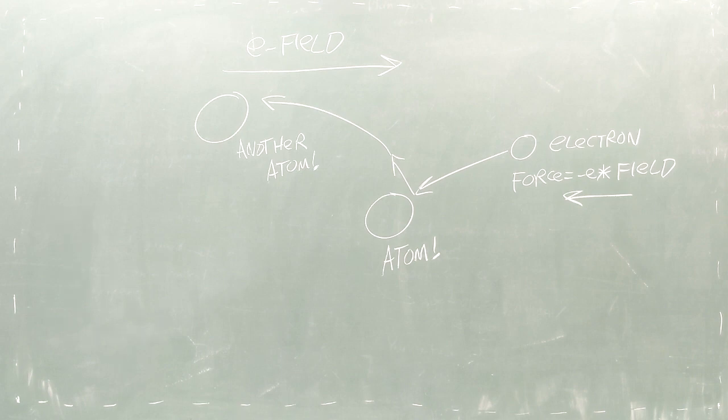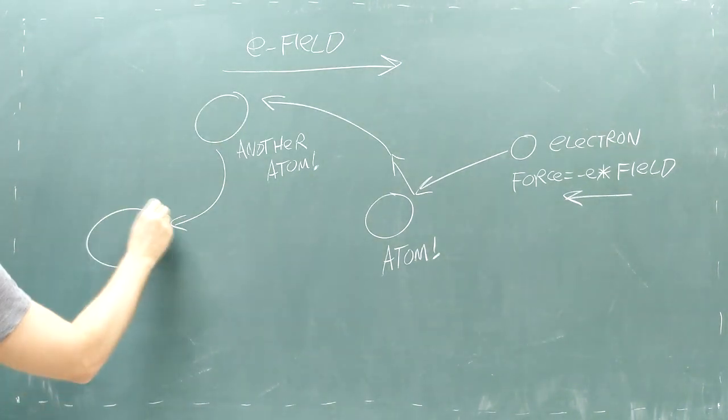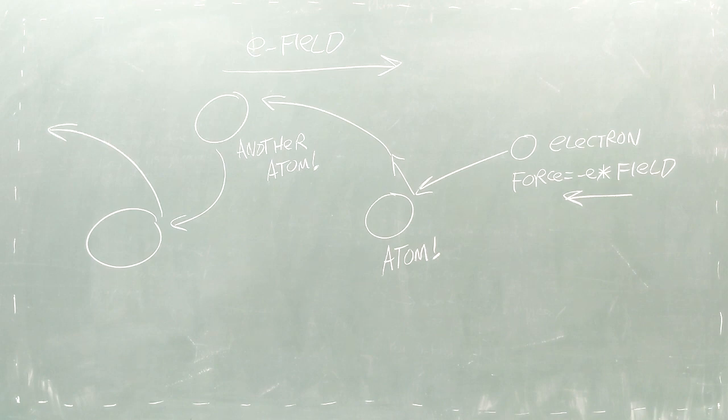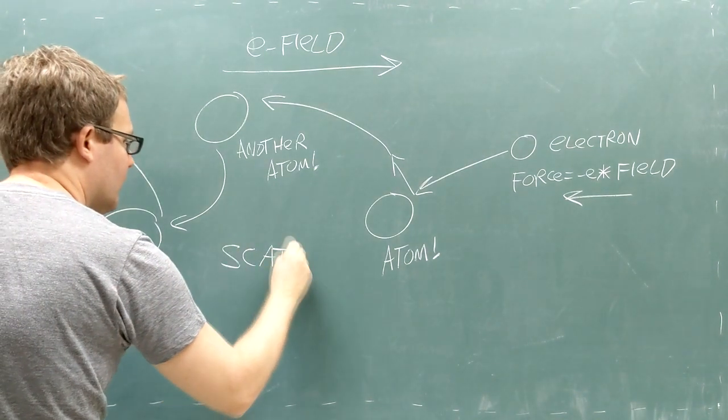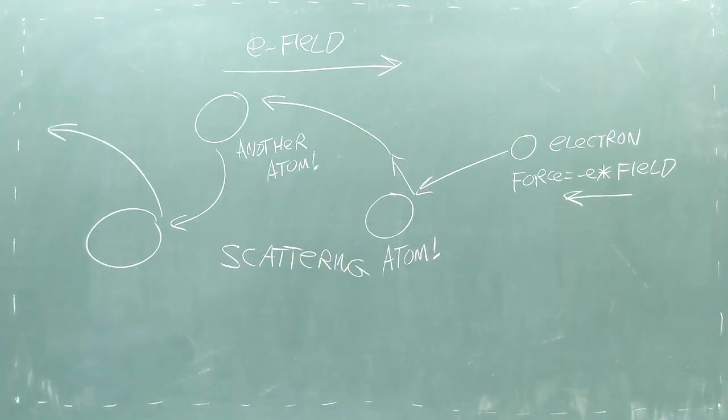The electron is like a car that accelerates between many stop signs. We call this process scattering, since the electrons in a wire are trying to move forward but end up getting scattered all over the place.